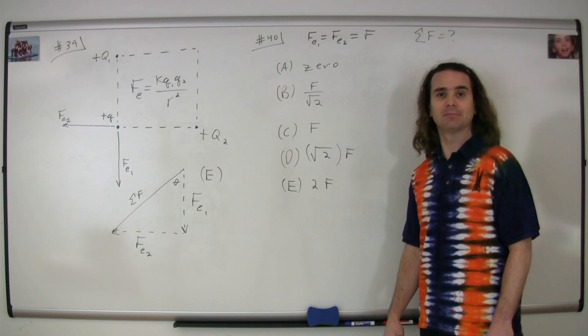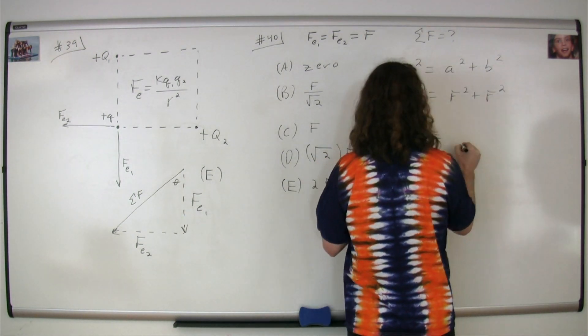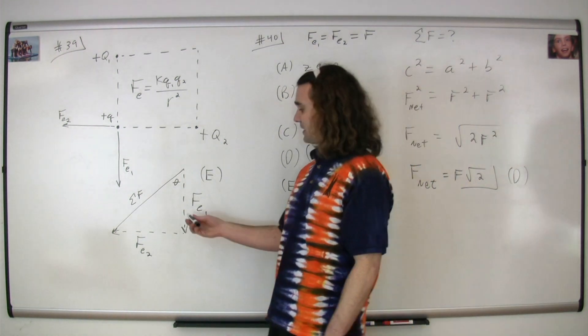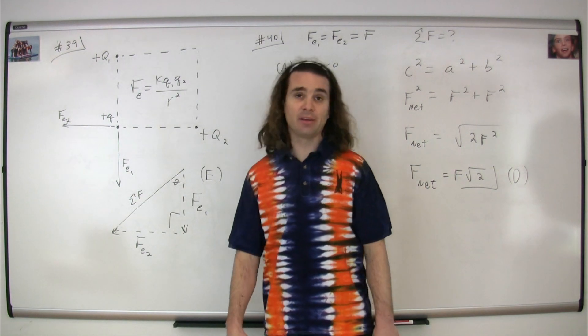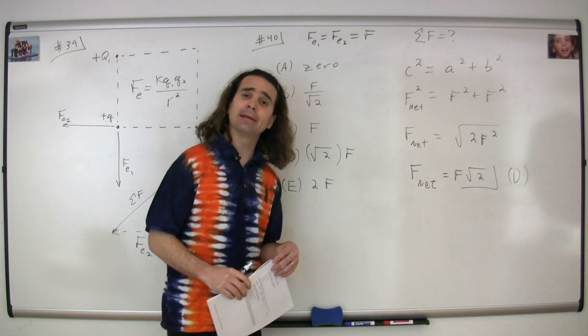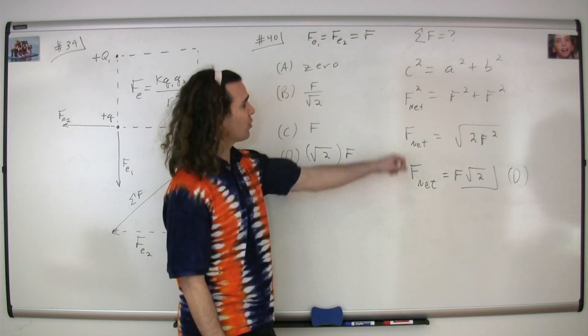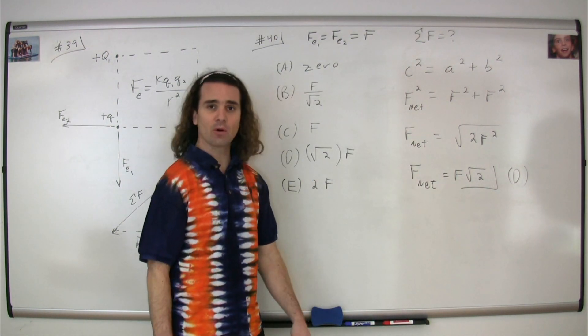Now, I'll walk through the math. The easiest way to do the math for this is to identify that this is a right triangle. Therefore, we can use the Pythagorean Theorem, which is A squared plus B squared equals C squared, or the net force squared equals F squared plus F squared.